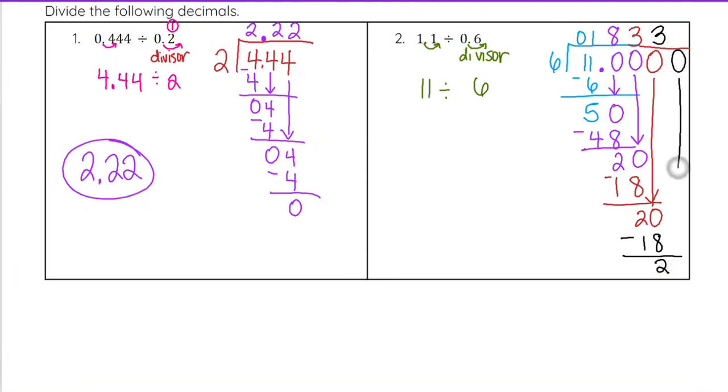So we'll have to put another 0 there. Bring it down, and we get 20 again. When we do that, we get 3. 3 times 6 is 18. Subtract, and we get 2. And you'll notice that this pattern is going to continue forever. So once we see it repeating 3 times, we can go ahead and stop and see, okay, this is not going to stop.